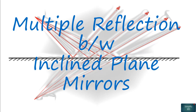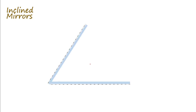Hello students. Now moving further in geometrical optics, in this video we will discuss about multiple reflection in the case of inclined plane mirrors. As already discussed in the previous video, multiple reflection in the case of inclined mirrors will happen when a ray of light incident on any of the mirrors gets reflected such that after reflection it will again be incident on the other mirror. Hence in this case we have multiple reflection and there will be multiple image formation for the same object.